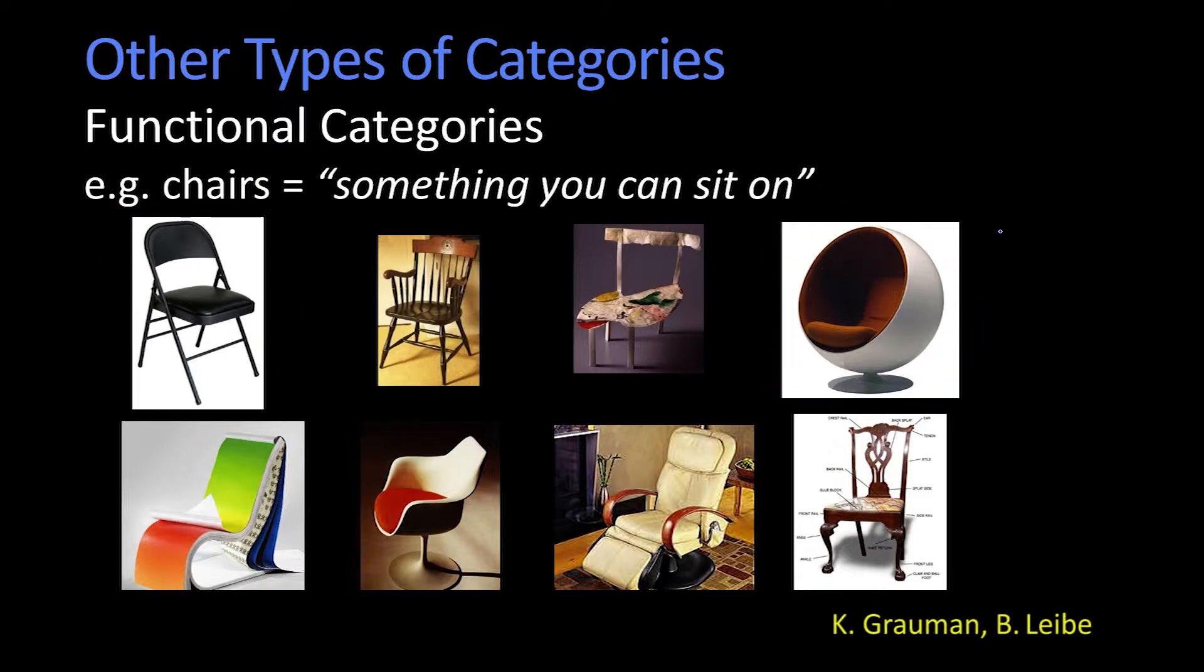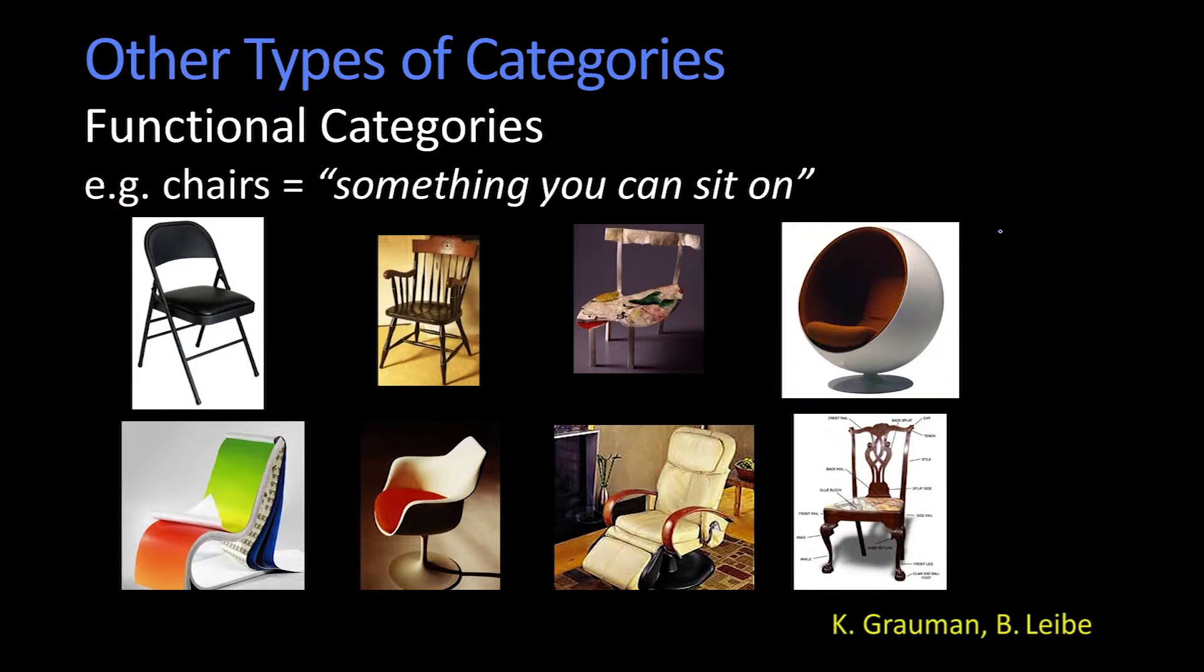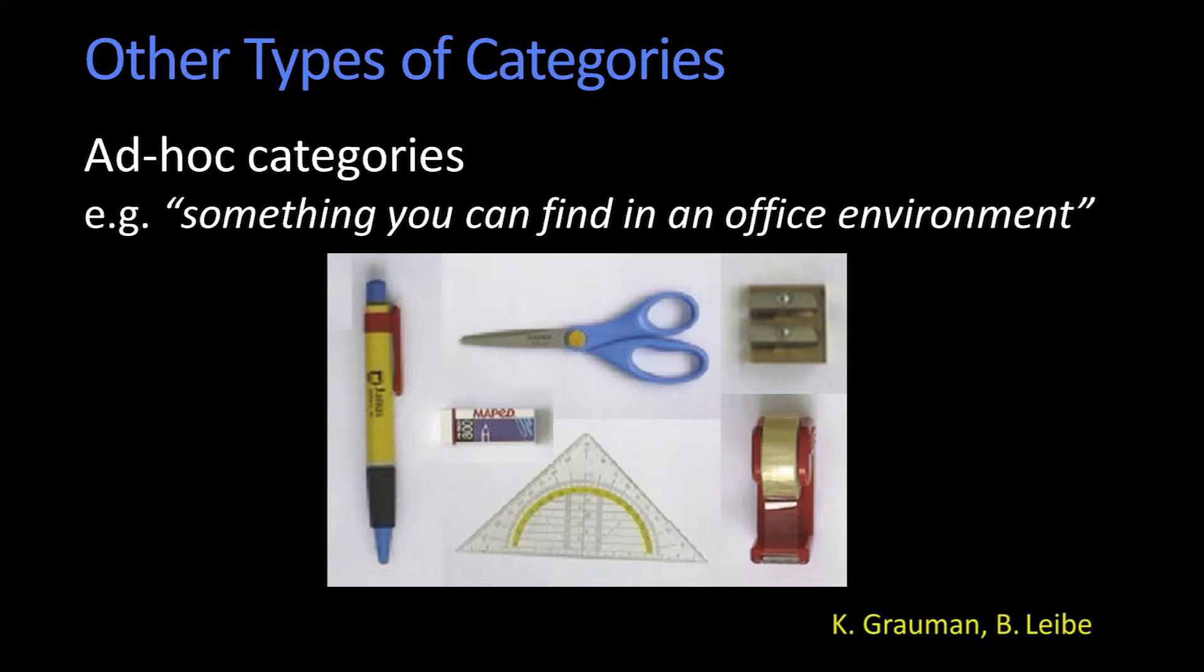Another type of category which is valid but not perceptually relevant might be these ad hoc categories of things you find in an office environment. That's a perfectly natural category. In fact, it's even a category which you can think about probabilistic reasoning as biasing things. If I tell you you're in an office, you're much more likely to find a stapler than to find a horse whip. So maybe that would bias your recognition. But the notion of it being a single visual category, as you can see from these objects, doesn't make a lot of sense.